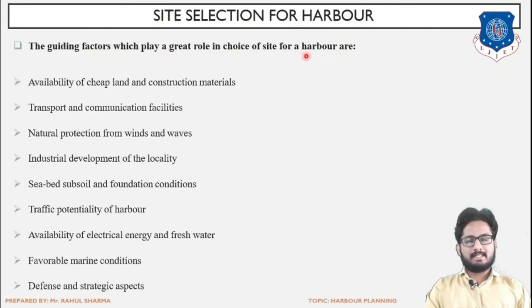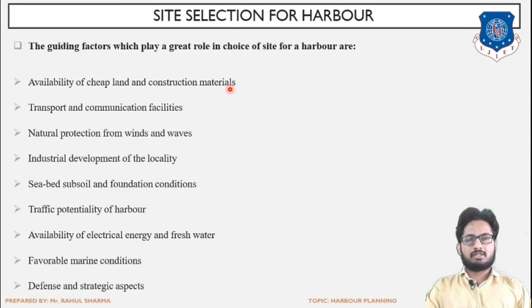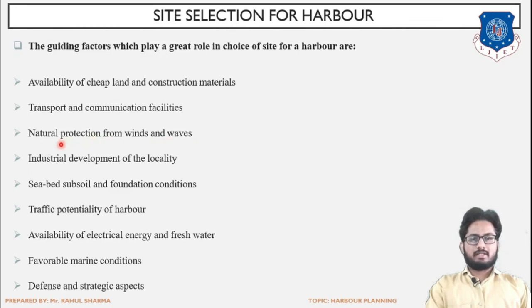Site selection for harbour: guiding factors in the choice of harbour location include availability of cheap land and construction materials. Cheap land is a basic advantage, and if construction materials needed for marine structures are easily available, that reduces overall cost. Transportation and communication facilities — connection with road or rail transport for moving cargo and commodities — are important. Natural protection from wind and waves through the existing landscape would reduce or eliminate the need for artificial breakwaters, reducing project cost.